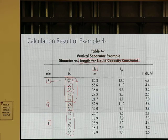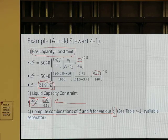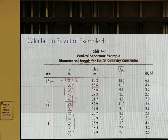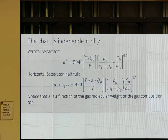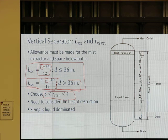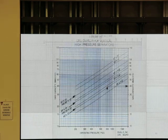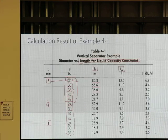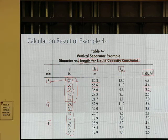Compute the slenderness ratio. For 3 minutes and 24 inches, I go back to D²H = T_R × Q_L / 0.12 and calculate H easily. After getting height for each case, I calculate seam-to-seam length — H plus 76, divided by 12, for diameter less than 36 inches. Then I calculate slenderness ratio: 12L/D. I pick the one between three and four.